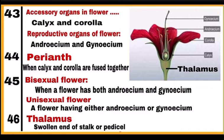Accessory organs of a flower: calyx and corolla. Reproductive organs of flowers: androecium and gynoecium. Perianth: when calyx and corolla are not distinct but fused together, it is called perianth. Bisexual flower: when a flower has both androecium and gynoecium — both male and female parts — it is called a bisexual flower. Unisexual flower: a flower having either androecium or gynoecium.